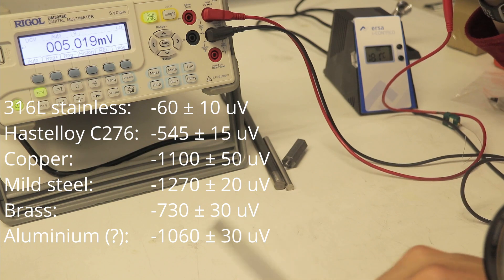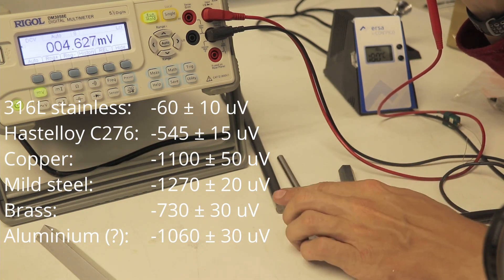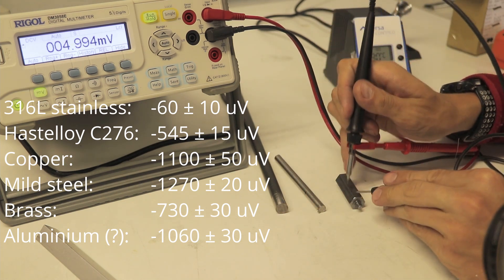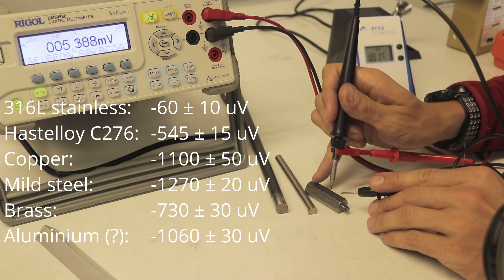So you can see, having a few standard materials like host alloy, stainless 316, and mild steel, I can very precisely identify which metal I have in front of me.